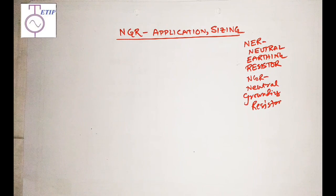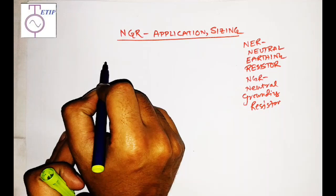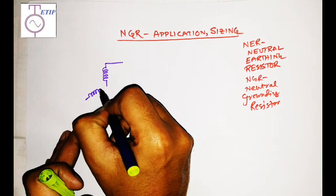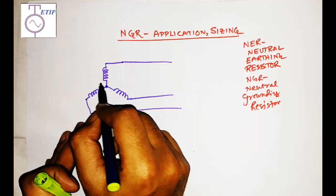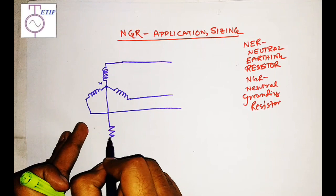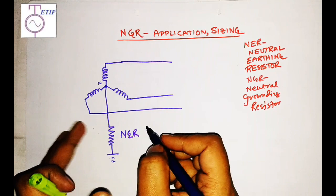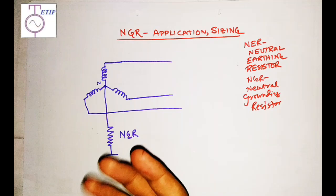NGR is connected to the neutral of a transformer or alternator — for small alternators, not for huge power plant generators. The secondary of a transformer has three output terminals, and the neutral point is connected to earth through an NGR, or Neutral Grounding Resistor. This NGR is required simply to limit the earth fault current.